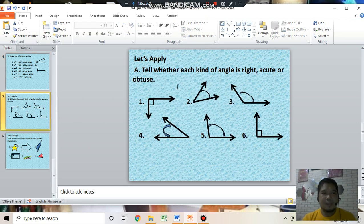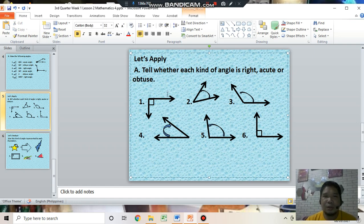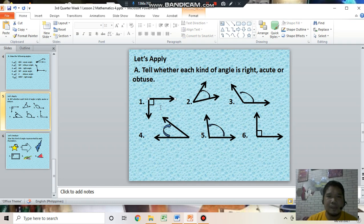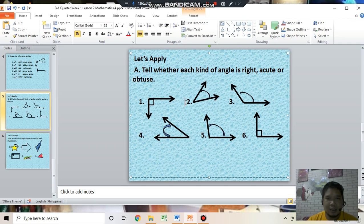Next activity, let's apply. Tell whether each kind of angle is right, acute, or obtuse. Number 1, I will answer number 1. This illustration or figure is a right angle because it forms a square corner or the measure is equal to 90 degrees. Can you answer the remaining numbers in your activity sheet or module?